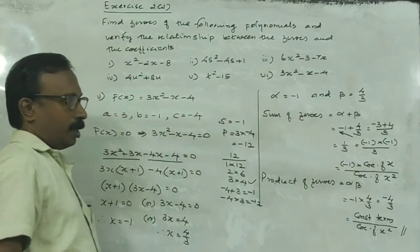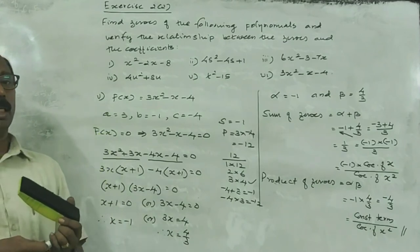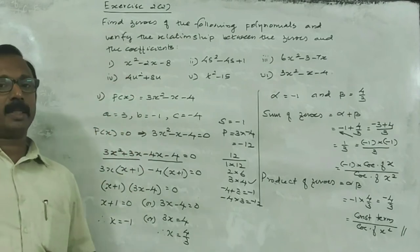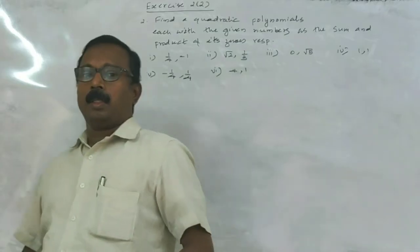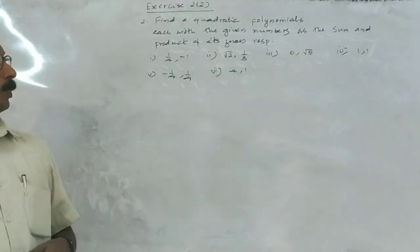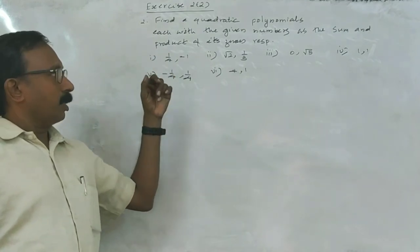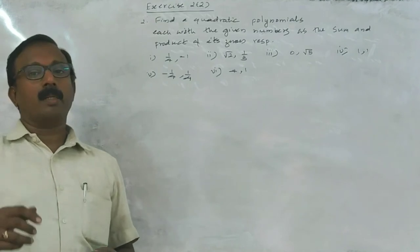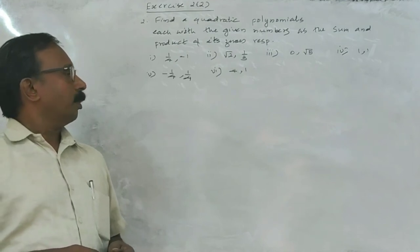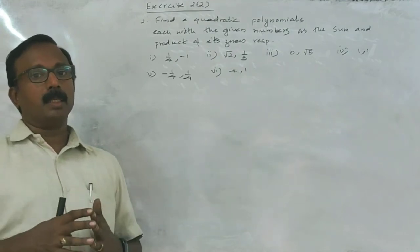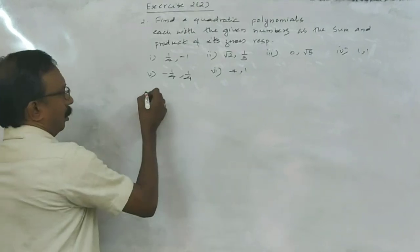Product of zeros: alpha into beta is minus 1 into 4 by 3, that is minus 4 by 3. Minus 4 is the constant term divided by coefficient of X squared, isn't it? This way we can find the zeros of a polynomial and also verify the relations between the zeros and coefficients.